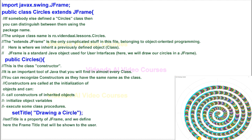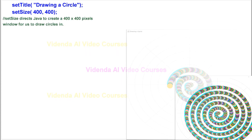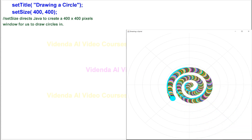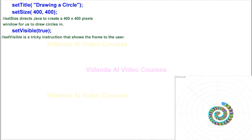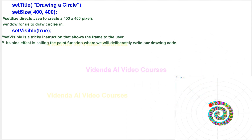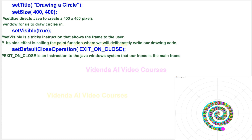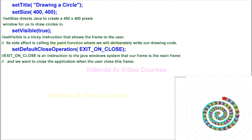SetTitle is a property of JFrame, and we define here the frame title that will be shown to the user. SetSize directs Java to create a 400 by 400 pixels window for us to draw circles in. SetVisible is a tricky instruction that shows the frame to the user. EXIT_ON_CLOSE is an instruction to the Java Windows system that our frame is the main frame, and we want to close the application when the user closes this frame.